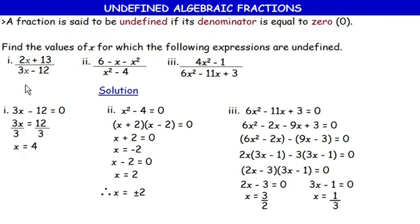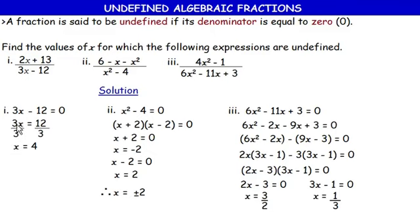Example 1: find x for which the expression is undefined — denominator is 3x − 12. Set 3x − 12 = 0. Bring −12 to the right: 3x = 12. Divide both sides by 3: x = 4.